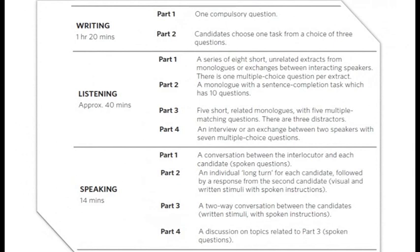The Writing section contains two parts: one compulsory part, which is always an essay, and a second part where you choose a task from three different questions. The Listening section lasts about 40 minutes with four different parts: long interactions, short interactions, short monologues, and an interview or exchange between two speakers with seven multiple-choice questions. Finally, the Speaking interview assesses both spoken production and spoken interaction, lasts 14 minutes, and has four parts: a conversation between the tester and candidate, an individual long turn for each candidate with follow-up questions, and parts three and four which are two-way conversations between candidates using written stimuli and spoken instructions.